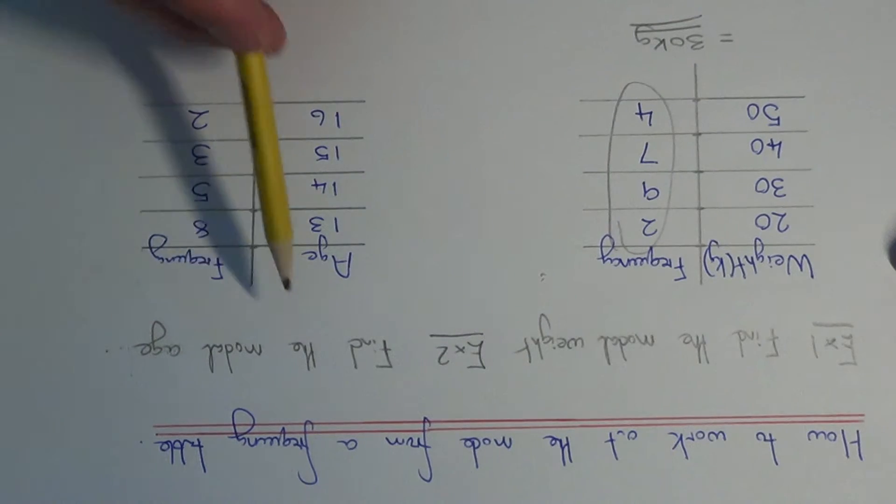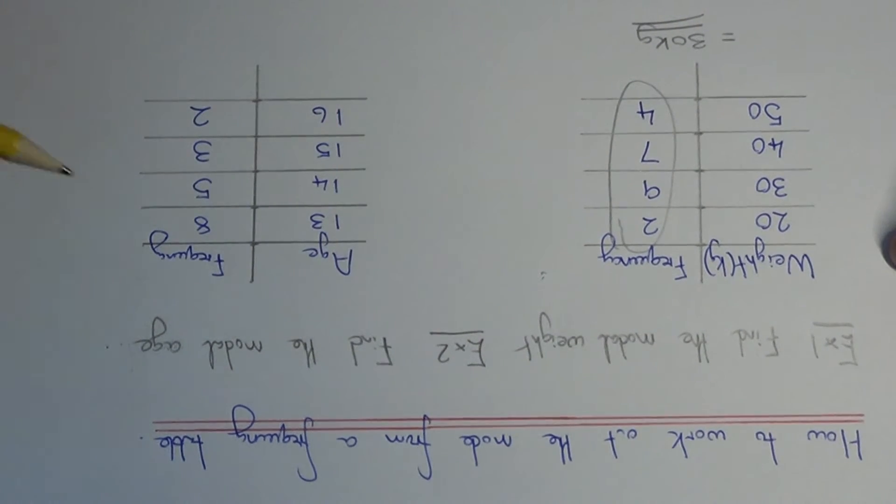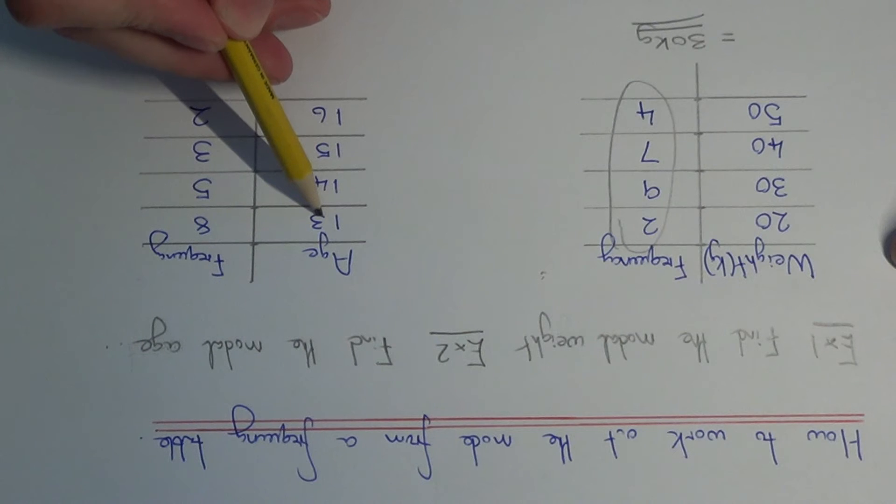So let's have a look at example two. This time we need to work out the modal age. Again, just focus on your frequency column and look for the one with the highest number in. That's the first one there, which is 8. So our mode will be 13 years old.